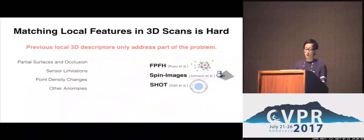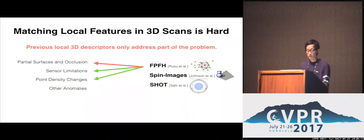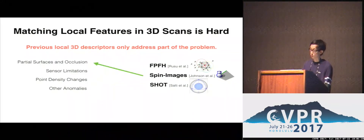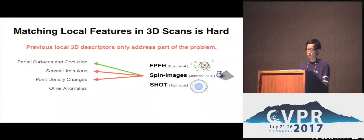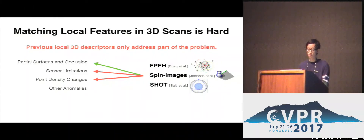In response to these challenges, previous local 3D descriptors typically only address part of the problem. Fast point feature histograms are robust to some sensor noise and point density changes, but break down with severe partial surfaces and occlusion. Spin images were created to address partial surfaces, but don't fare well with noisy point clouds or density changes. The main problem is that many handcrafted descriptors were designed to handle only one or two parts of the problem rather than all the issues found in real 3D scans.